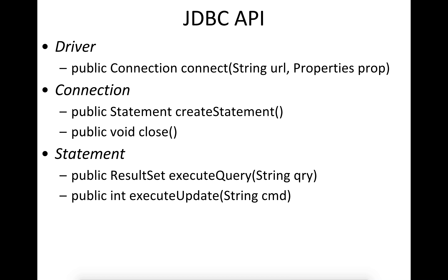For updates, you execute the SQL command and it comes back with some status information — for example, how many records were updated. So that's the main set of APIs for JDBC.